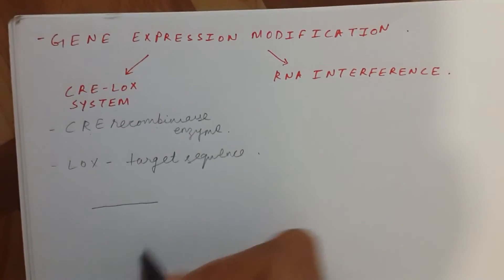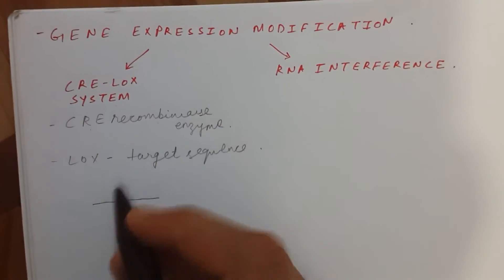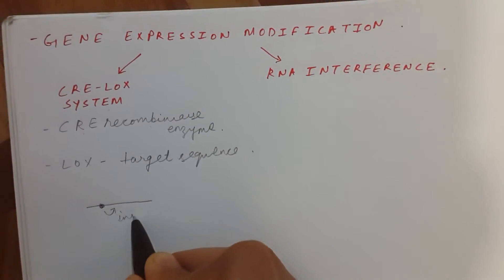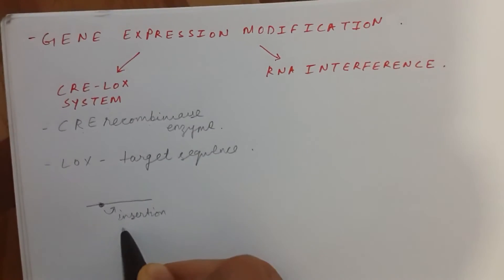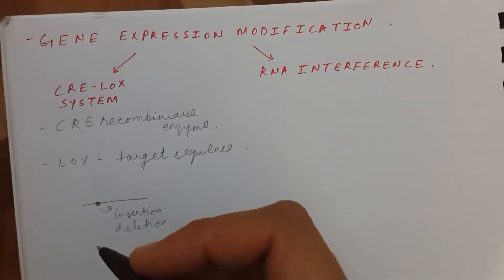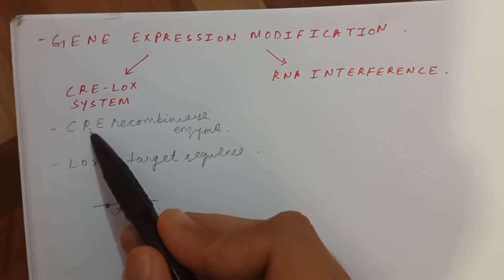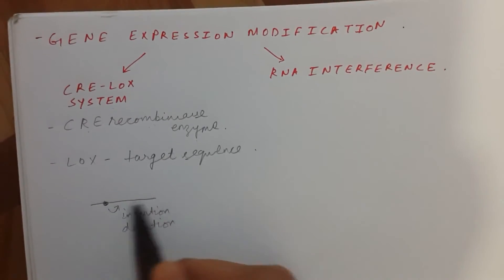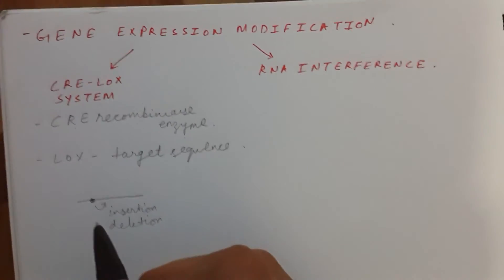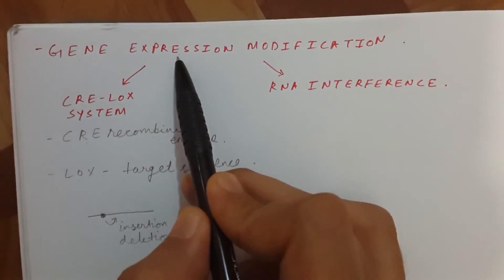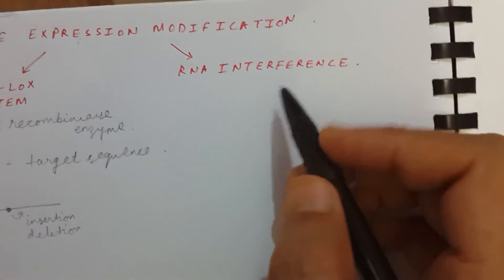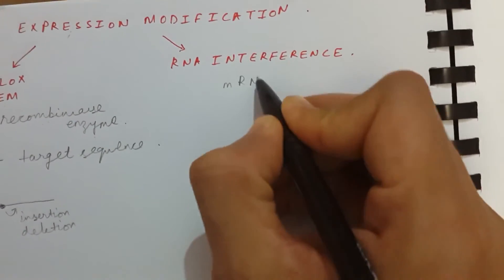The CRE recombinase enzyme will go and bind to a gene sequence on the DNA, and it will either cause insertion of a gene, deletion of a gene, translocation, or inversion of the gene. So this CRE recombinase enzyme works on the LOX target sequence and causes gene insertion or deletion, affecting gene expression.